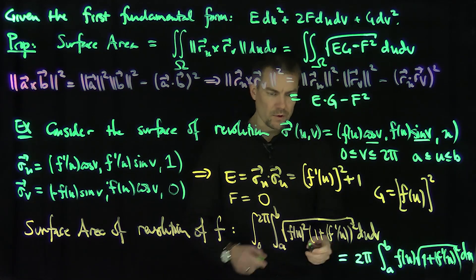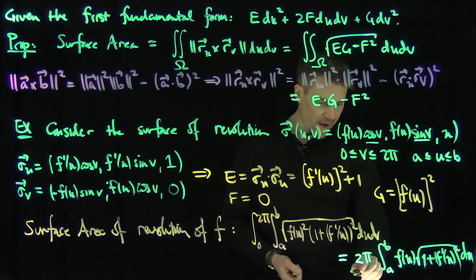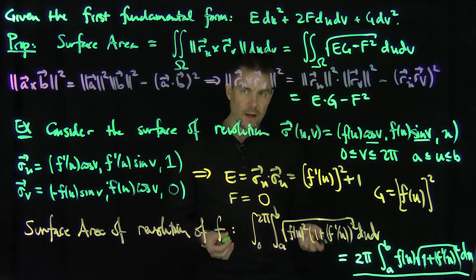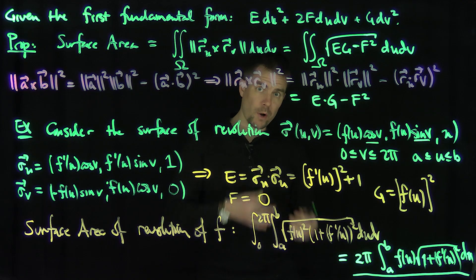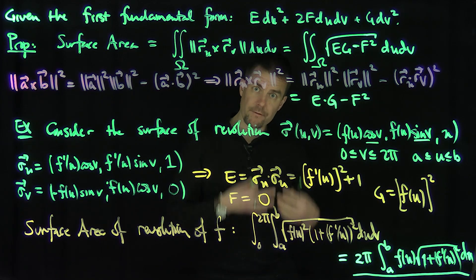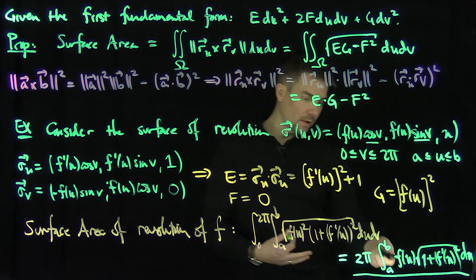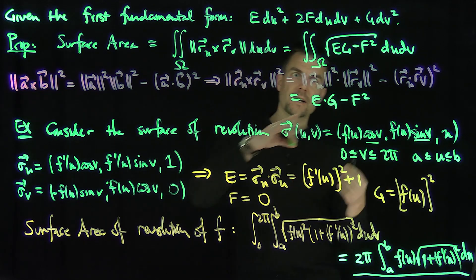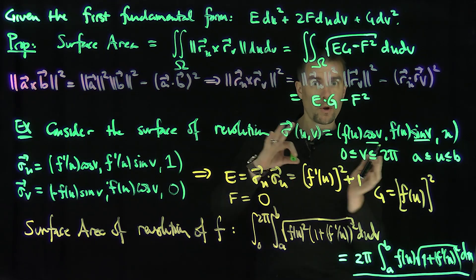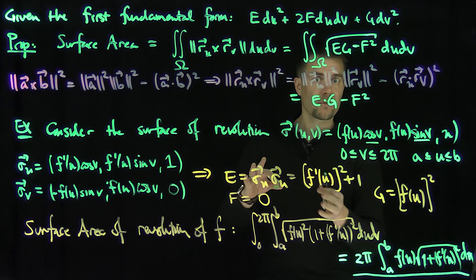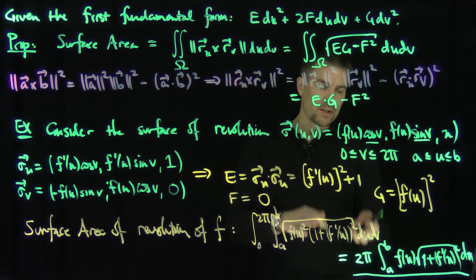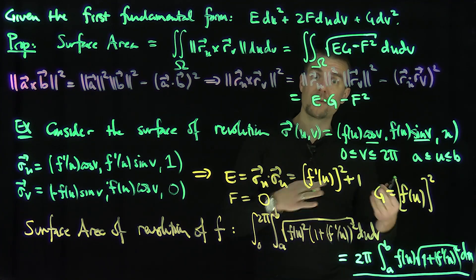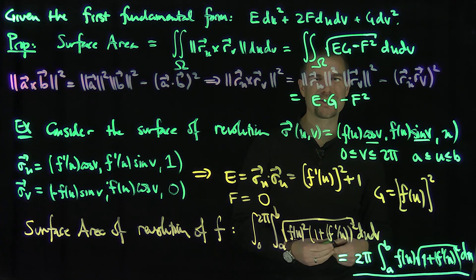This reduces to the standard formula: 2π times the integral from a to b of f(u) times the square root of 1 plus f′(u)² du — assuming f is non-negative. That's the standard Calc 2 formula for the surface area of revolution when rotating a function f around an axis. So this gives us our surface area formula, which generalizes not only surfaces of revolution but all sorts of surfaces. Thank you very much.